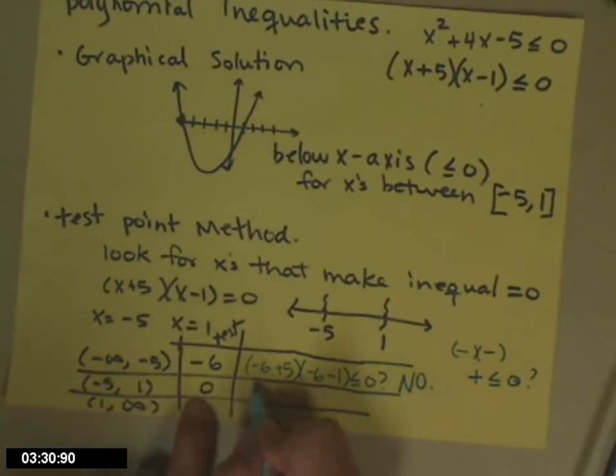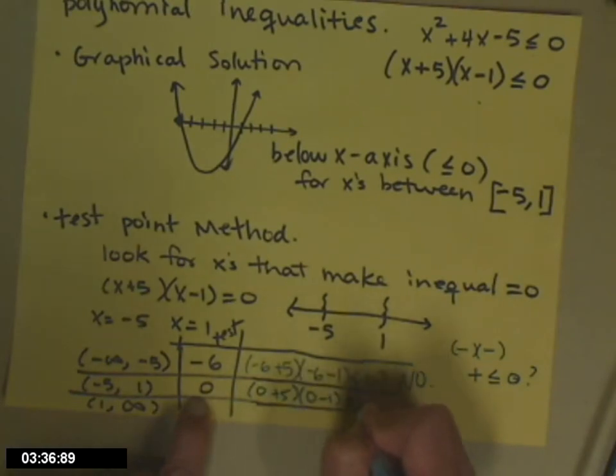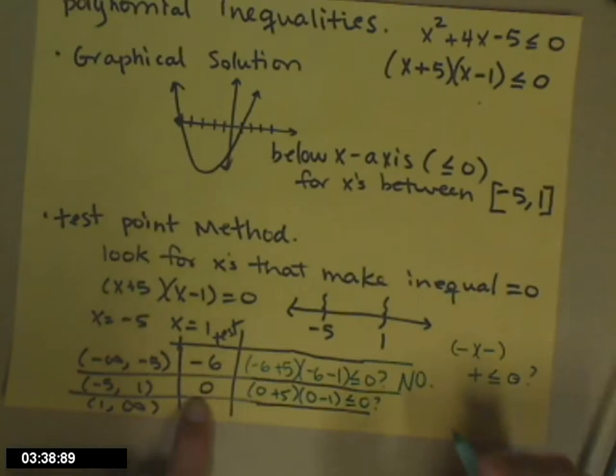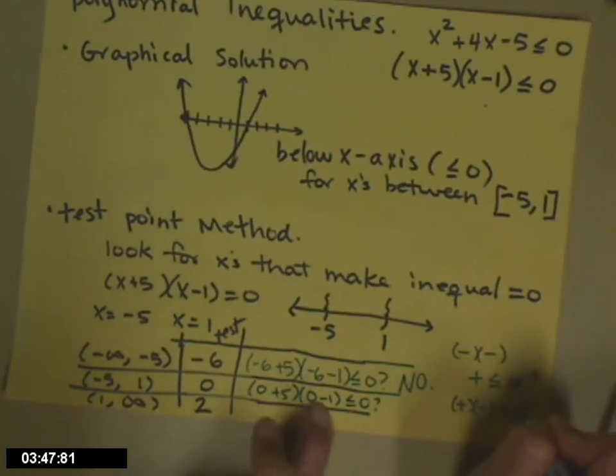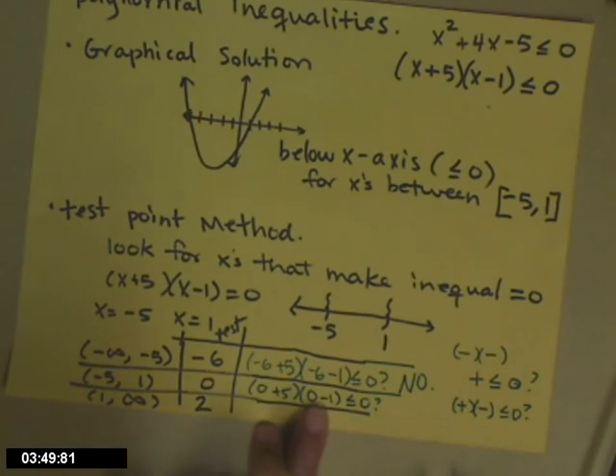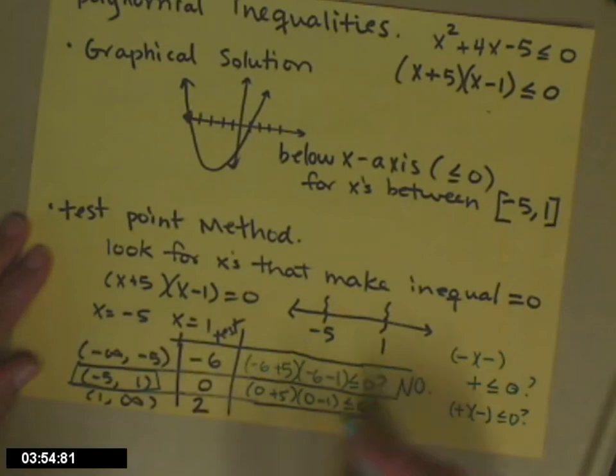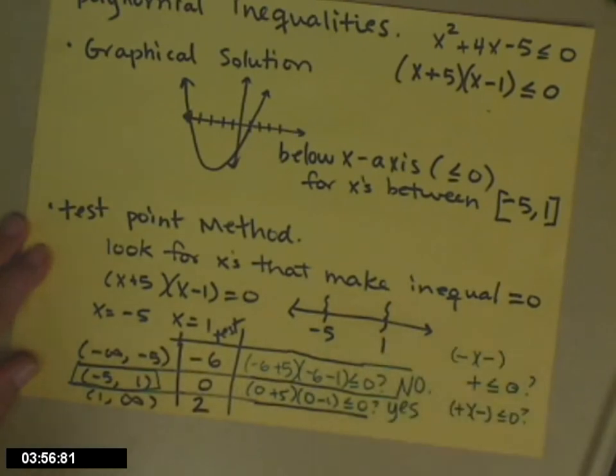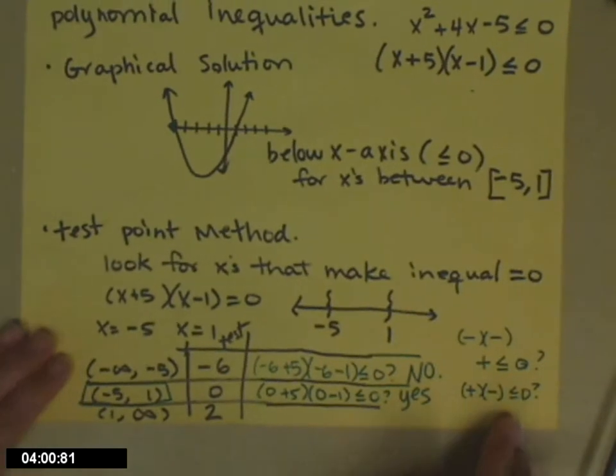So next I'm going to check zero. Is zero plus five times zero minus one less than or equal to zero? So this time I have zero plus five is a positive, times zero minus one, that's a negative. Is that less than or equal to zero? A positive times a negative is a negative. That is less than or equal to zero. That is part of my solution set. I don't know if it's all of it. Well, I do because we've already solved it, but we'll pretend like we don't know for sure.